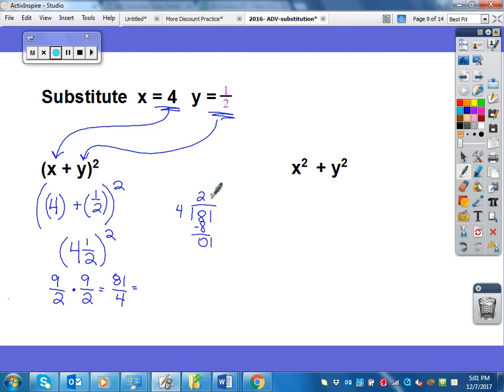4 doesn't go into 1, so that's 0. And I remain there 1. So that's going to be 20 and 1 fourth as our answer.